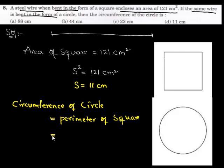We have the side of the square is 11 cm, so its perimeter becomes 4 times its side, that is 4 × 11, which equals 44 cm.